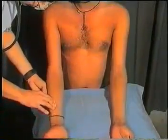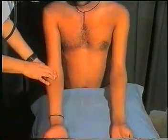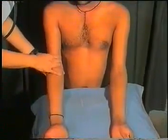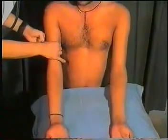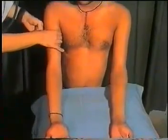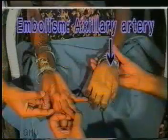Now palpate the gangrenous and proximal limb for tenderness. Next, palpate along the lines of major vessels for tenderness — that is along the popliteal and femoral arteries in the lower limbs and radial, brachial and axillary arteries in the upper limbs. Tenderness indicates recent thrombosis or embolism. Note the tenderness along the course of the axillary artery in this case of axillary artery embolism.